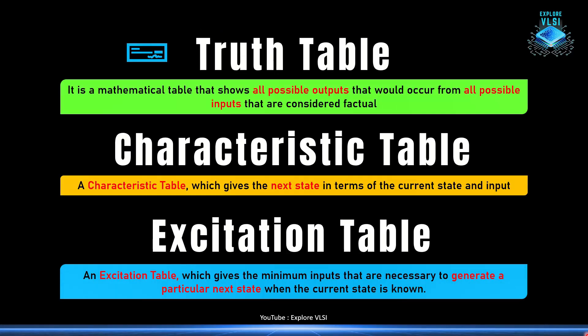What is a truth table? It is a mathematical table that has some input combinations and the corresponding output combinations. The truth table states the true fact of the design: if you give inputs in a certain way, the outputs will be as specified. That is what a truth table is — it describes the true behavior of the design and how the output is generated.